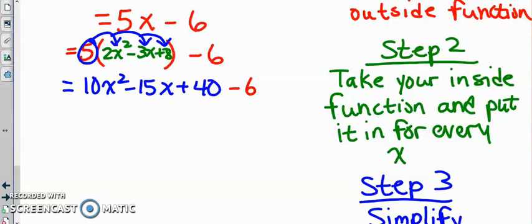All right, and then the last part is again simplifying it by combining like terms. So like terms here, it's 10x squared minus 15x plus 34. So our golf or g of f of x.